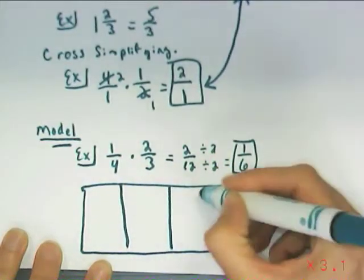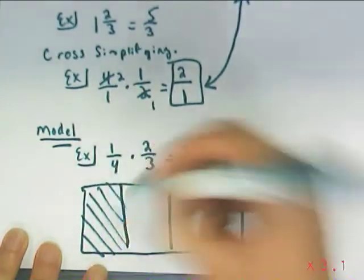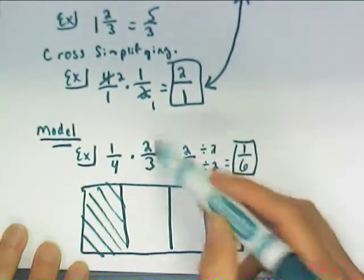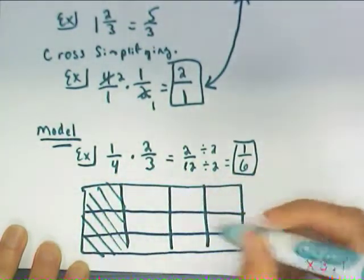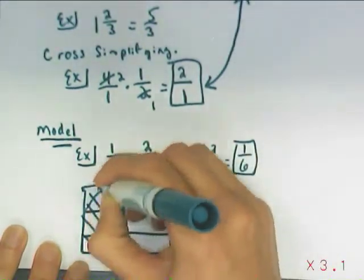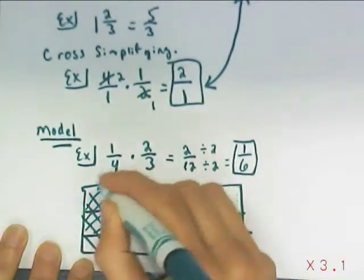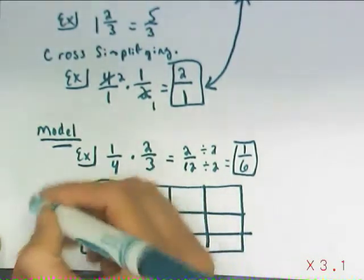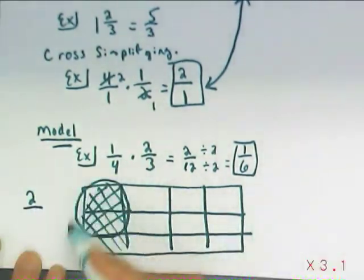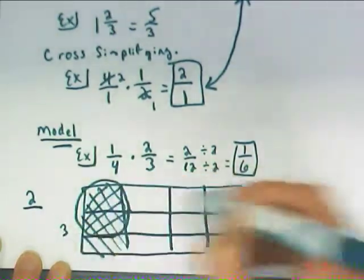The width here, like so, one piece of it is here. Then in the other direction, I'm going to model 2 thirds. So I divide it into thirds, and I shade 2 of those thirds. I'm going to go ahead and do it in the opposite direction. Wherever those are overlapped is going to be your answer. So you look at how many pieces I have as a portion of the total.